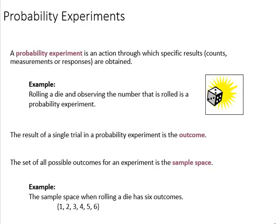Rolling a die, for instance, can result in a particular outcome. Observing the number that is rolled, therefore, is a probability experiment.